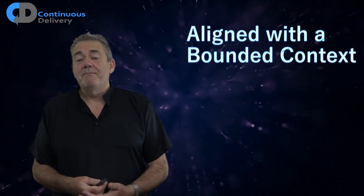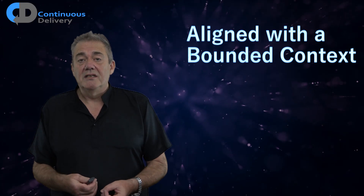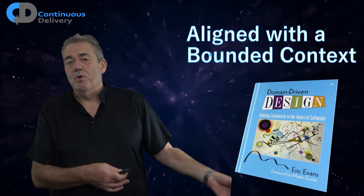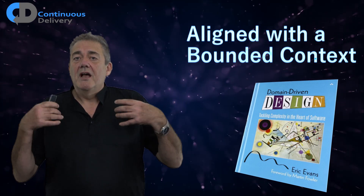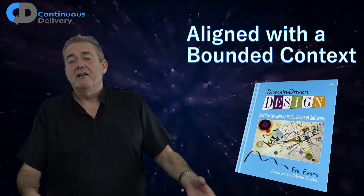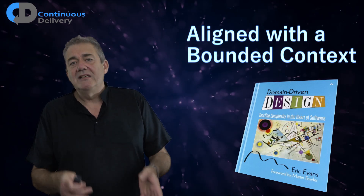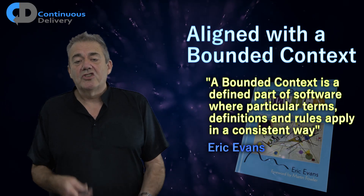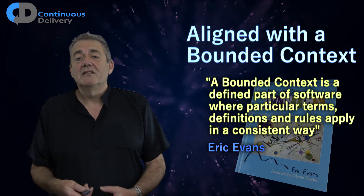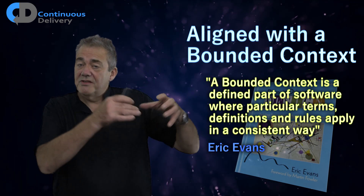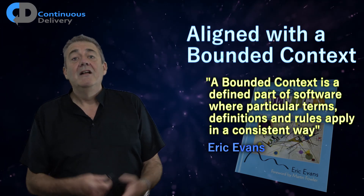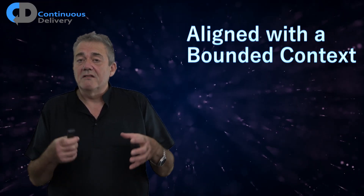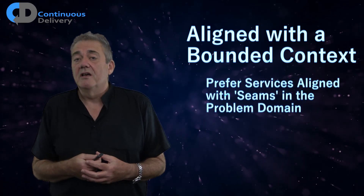The next in the list is aligned with a bounded context. Most teams miss this idea and it's an important one. A bounded context is an idea that comes from domain-driven design — the fantastic book written by Eric Evans — which describes modeling the problem domain as an approach to designing software. Eric defines it as a defined part of software where particular terms, definitions and rules apply in a consistent way. This is a part of the problem domain where concepts are related to one another and form a cohesive unit. In the sphere of microservices, it's very important because those are the boundaries that we would prefer to align our services with.